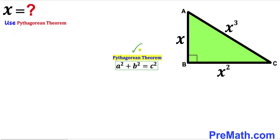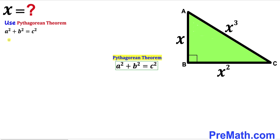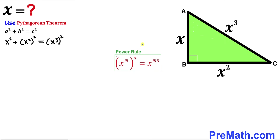We are going to apply the Pythagorean theorem on this triangle. The theorem states: A squared plus B squared equals C squared. In our case, the hypotenuse is x cubed and the two legs are x and x squared. Let's fill in the blanks: x squared plus (x squared) squared equals (x cubed) squared. Now let's recall the power rule of exponents.